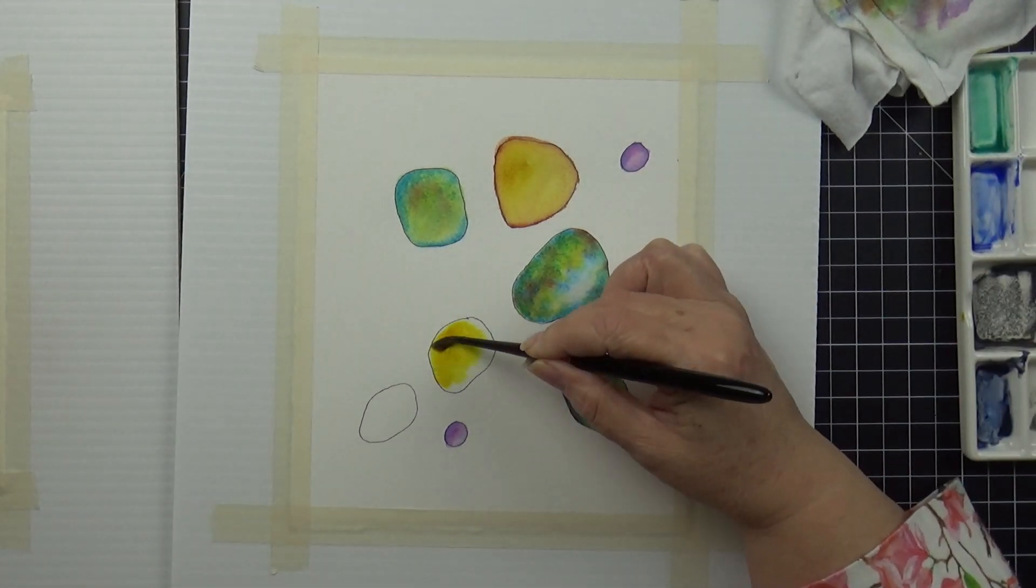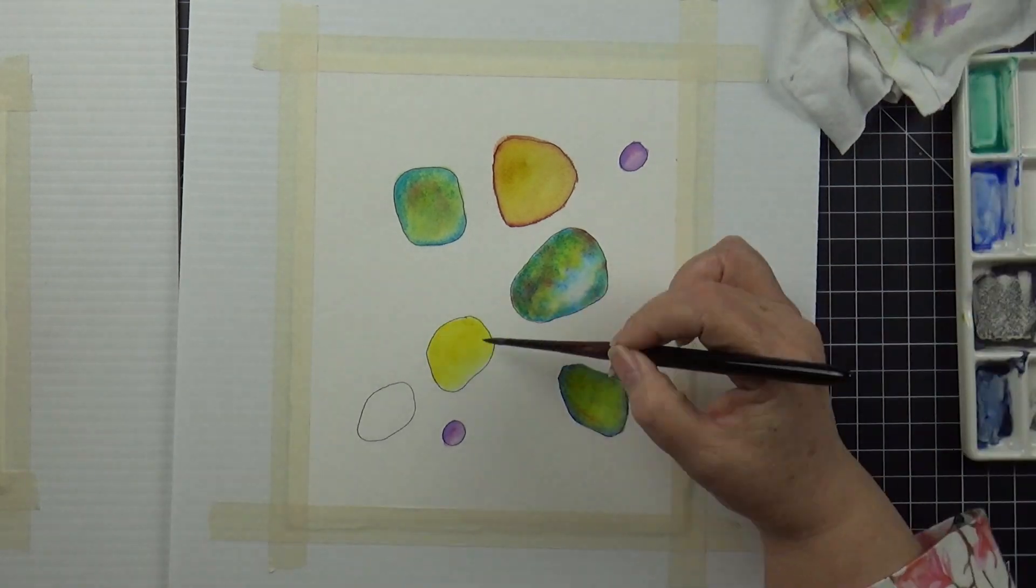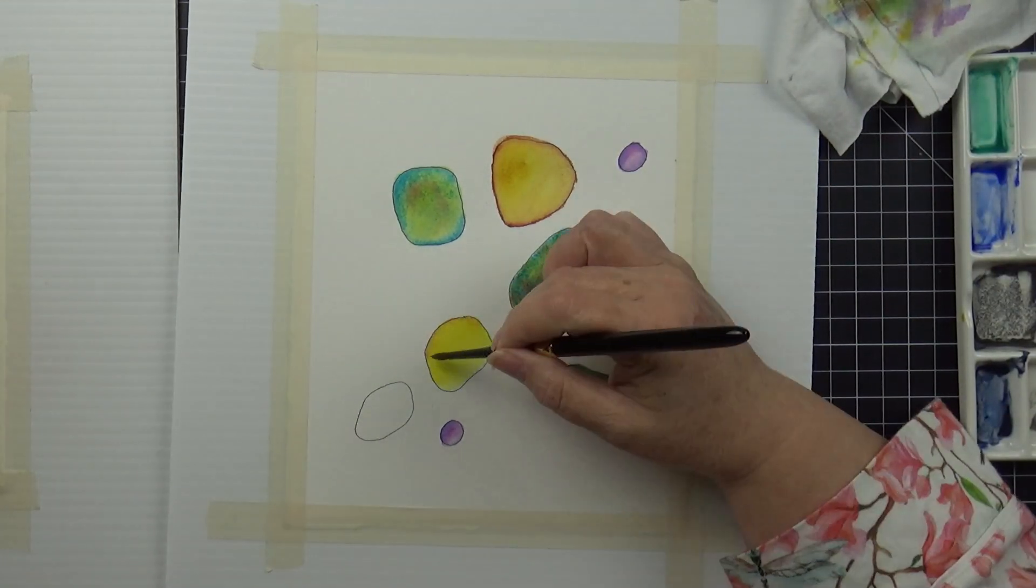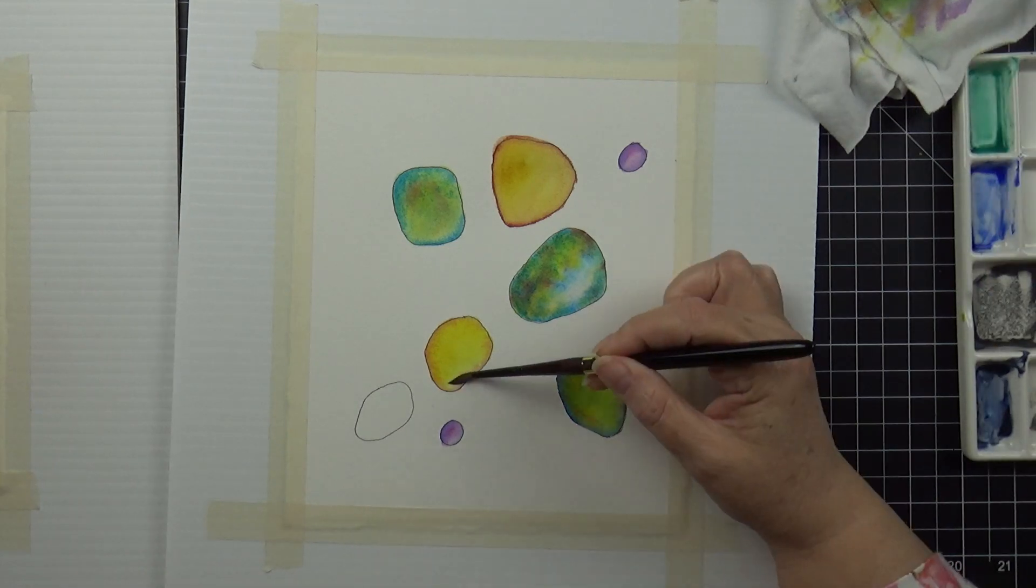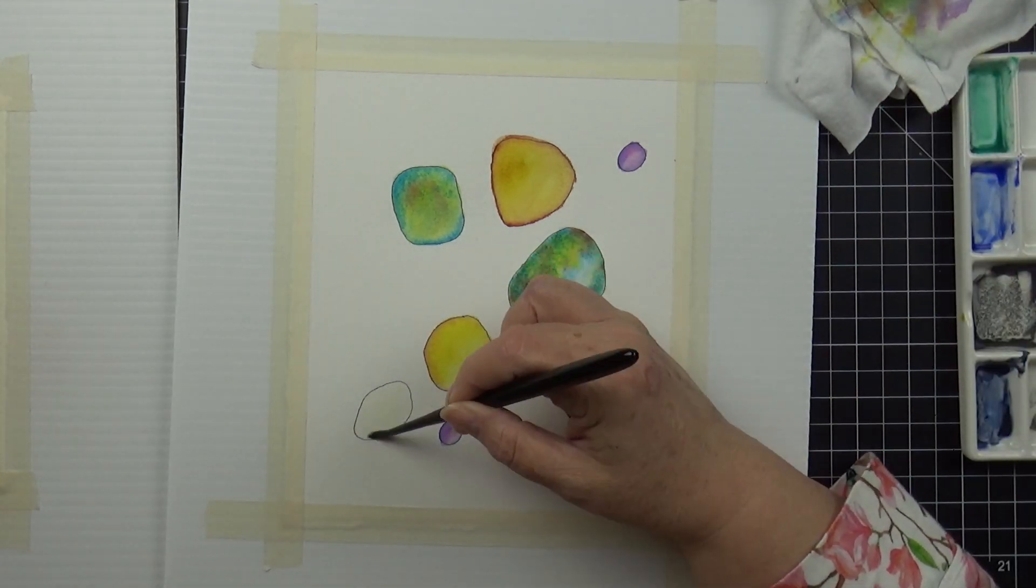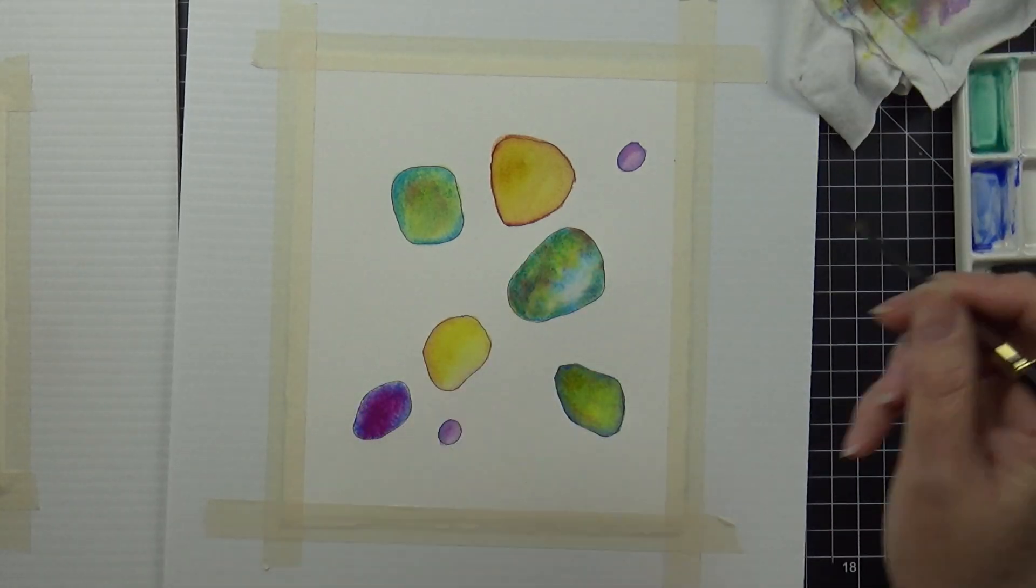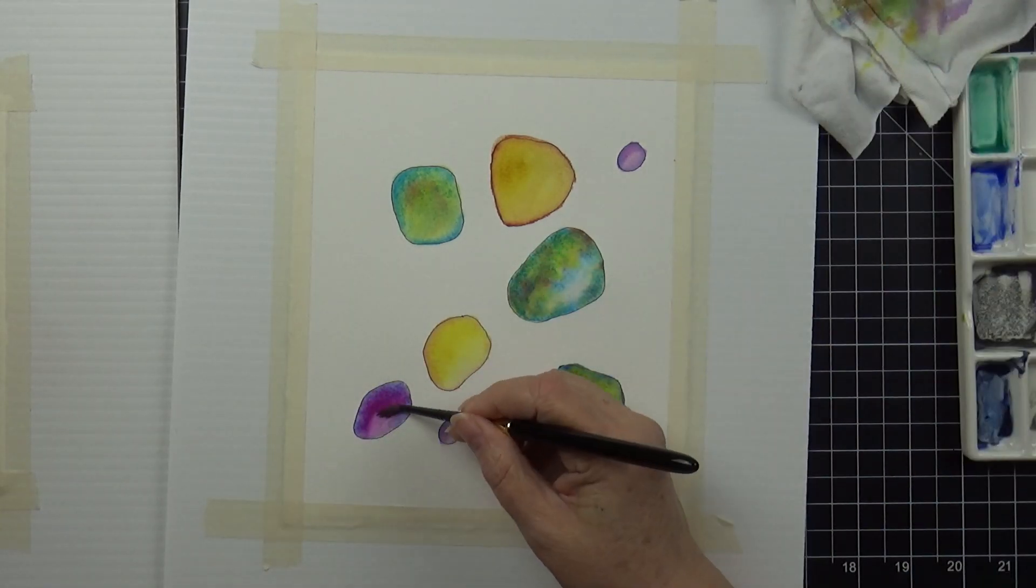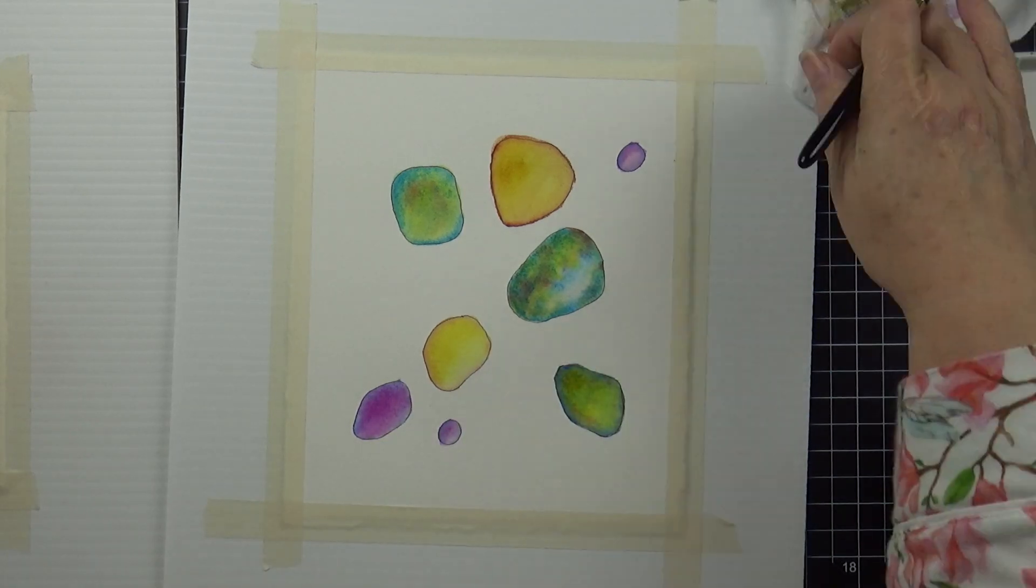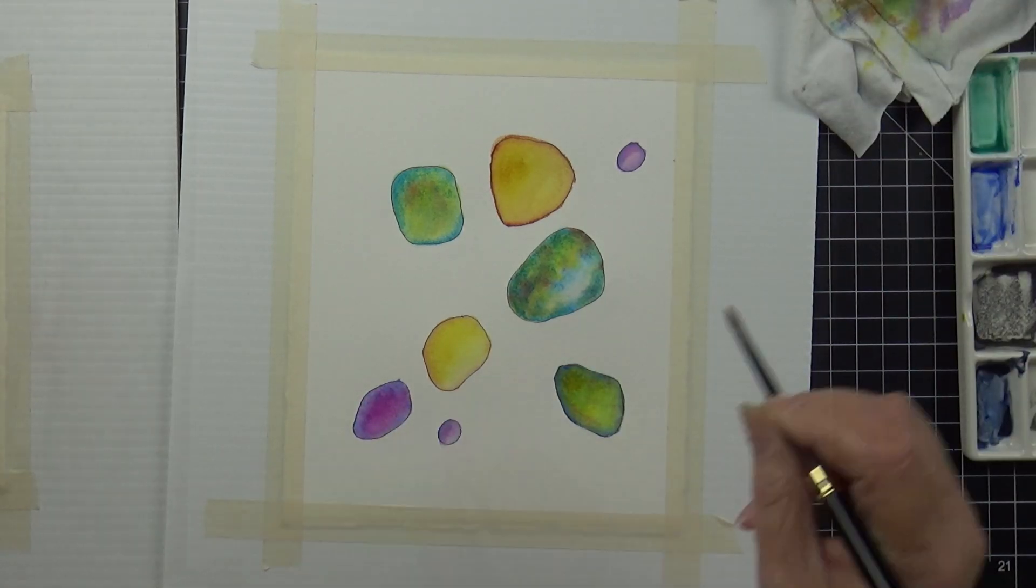Basically what I did was I just used a wet on wet technique and dropped in one color inside of where the gem is. Then I just added some other colors, just dropped them in around the edge, like a darker color around the edge, and just dropped in little granulating pigments in some of them.